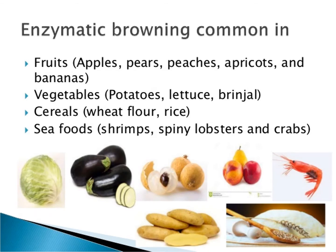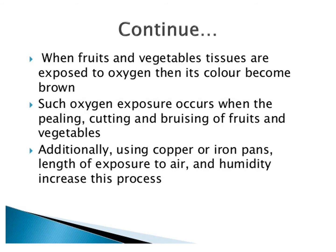Enzymatic browning is common in fruits like apple, pear, peaches, apricot, and banana; in vegetables like potato, lettuce, and brinjal; in cereals like wheat flour and rice flour; and in seafoods like shrimps, spiny lobster, and crabs.